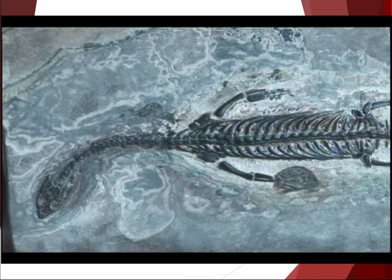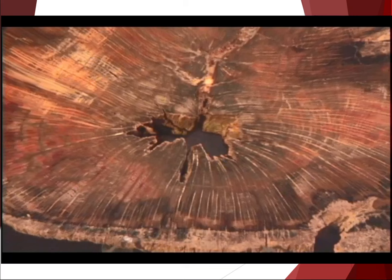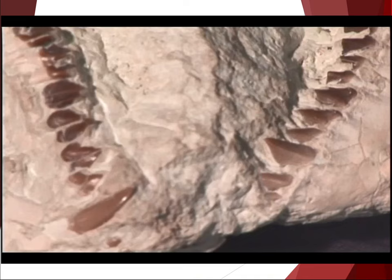Fossilization can occur in a number of ways. The most common is when an organism, such as a trilobite, becomes buried and the original material is dissolved away, leaving a mold. The mold is then filled with some type of material, and a cast of the original organism is created. Petrification occurs when the original molecules of an organism — for example, wood — are replaced by silica molecules. Sometimes the original material is preserved, as with the enamel on the oreodont's teeth, or ancient plants fossilized in the altered chemical state we call coal. Finally, there are trace fossils, such as dinosaur tracks.